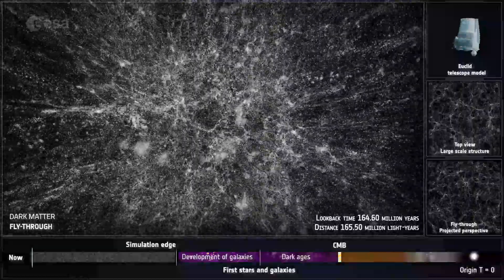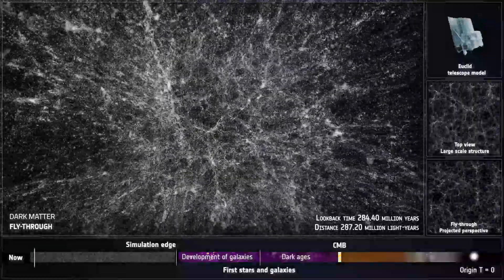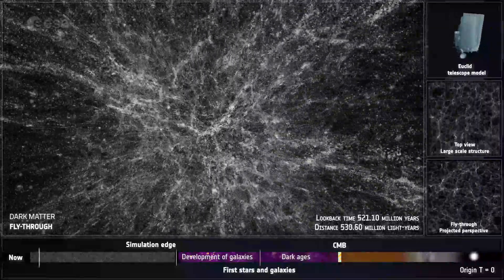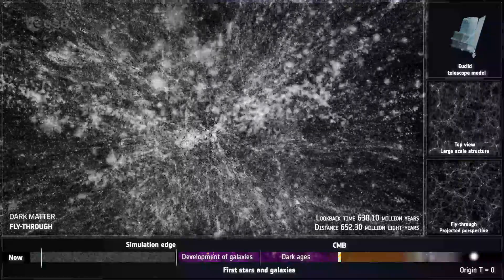This is the simulated dark matter distribution. We note it is not randomly distributed, but rather forms clusters, filaments, and voids in between.